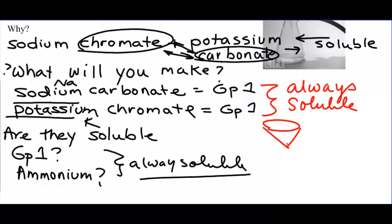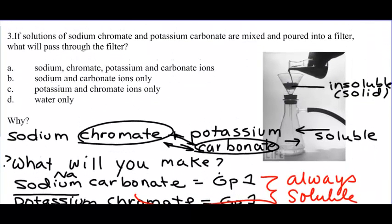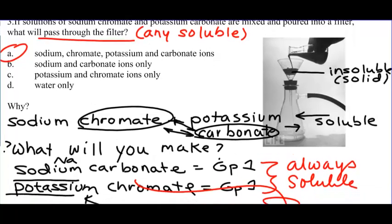So if you put this mixture and you filter it, these guys are all going to run through. So you're going to have your sodium ions, you're going to have your potassium ions, you're going to have your carbonate ions, and you're going to have chromate ions all running through the filter. There is nothing insoluble made, so nothing will remain on the filter. So they want to know who will pass through the filter. It will be any soluble ions. And everybody's soluble here, so it's all of them. Sodium, chromate, potassium, and carbonate. They're all going to pass through the filter. Only the insoluble would remain on the filter.